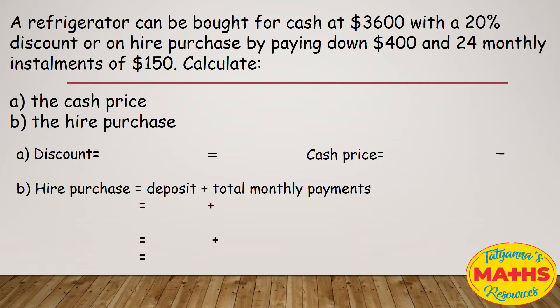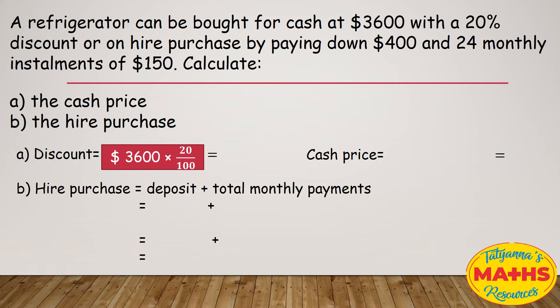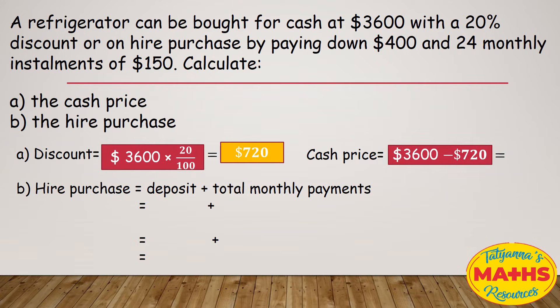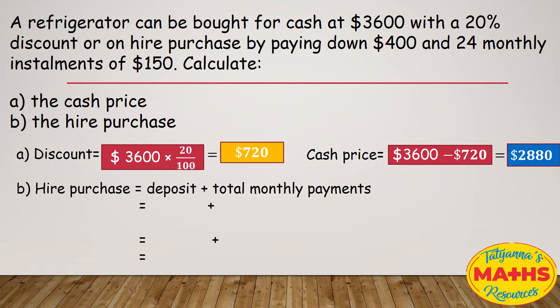So for the discount first, we would have to find 20% of $3,600. Notice I have my percentage as a fraction, 20 over 100, multiplying that by $3,600 — I'm gonna get $720. But it's a discount, so do we add or subtract? It's a discount, so we subtract. She's gonna pay less because she paid cash. So we take $720 from $3,600, and this customer will pay $2,880.